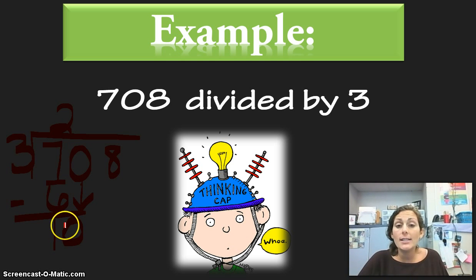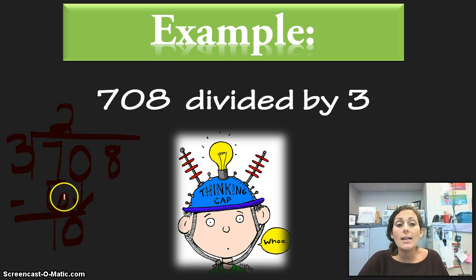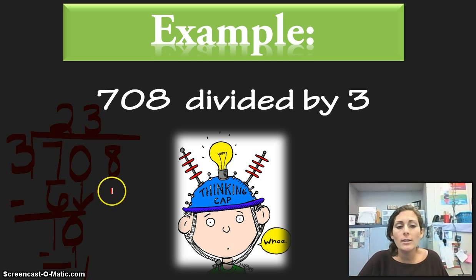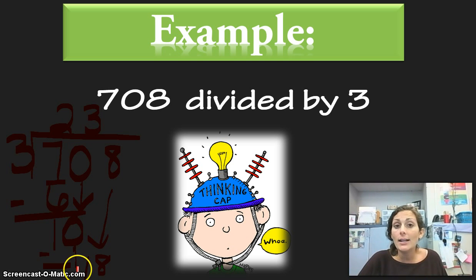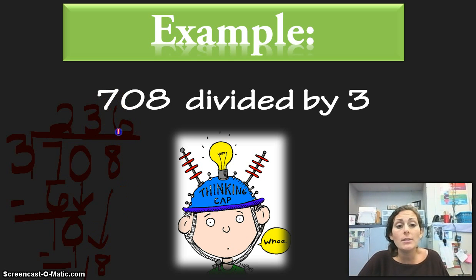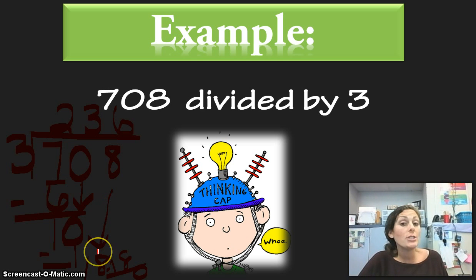3 goes into 10 — the multiples are 3, 6, 9, 12, and 12 would be too much — so 3 goes into 10 three times. 3 times 3 is 9. Subtract to get 1, then bring down our 8. 3 goes into 18 — multiples: 3, 6, 9, 12, 15, 18 — so 3 goes into 18 six times. 6 times 3 is 18, and we do not have a remainder. So our quotient, the answer to the division problem, is 236.